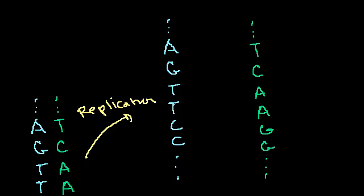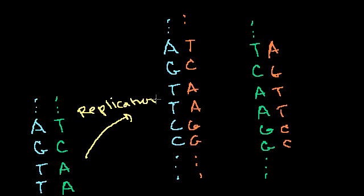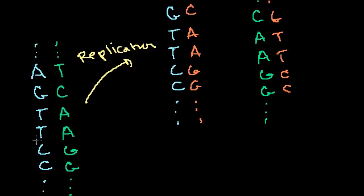Now, if one strand is sitting by itself, a thymine base might come and join right here. Nucleotides start lining up: thymine, cytosine, adenine, adenine, guanine, guanine, and it keeps happening. The same thing occurs on the other strand. By separating and then attracting their complementary bases, we just duplicated this molecule. This is how DNA makes copies of itself.